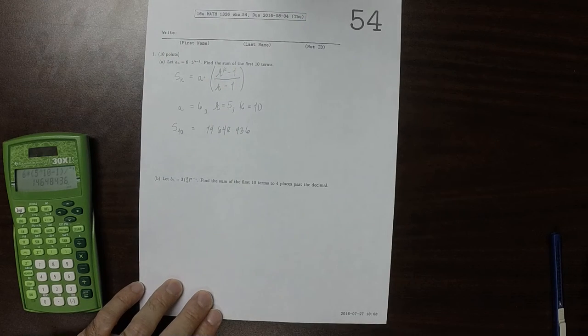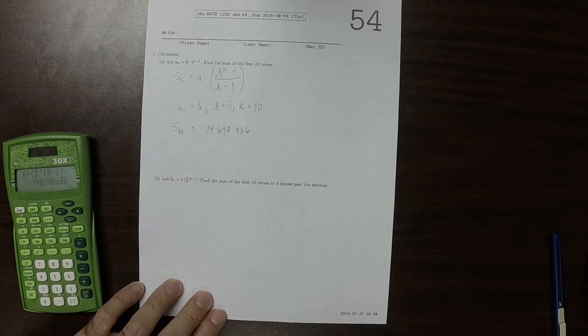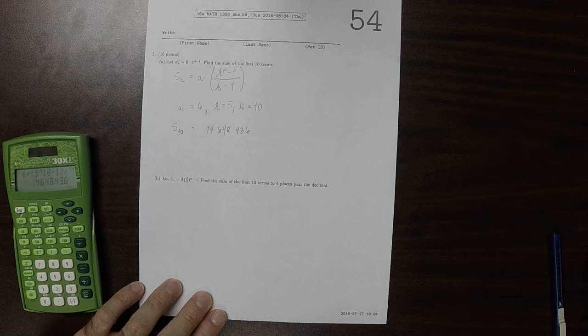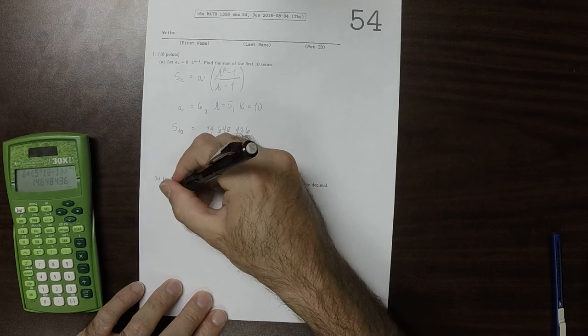Now part B, it's essentially the same exercise with different values of A and R. So it's SK equals A multiplied by R to the K minus 1, over R minus 1.